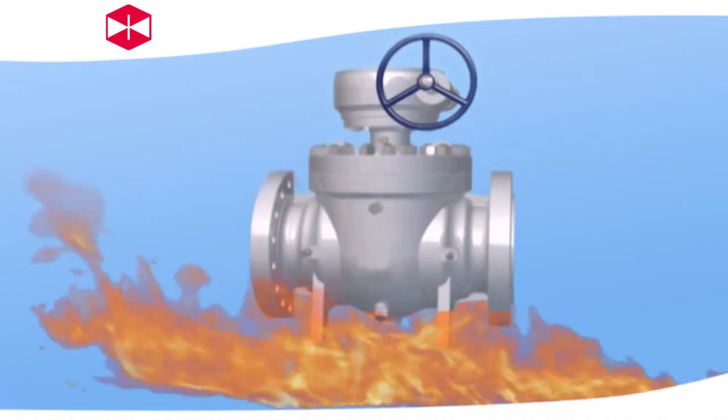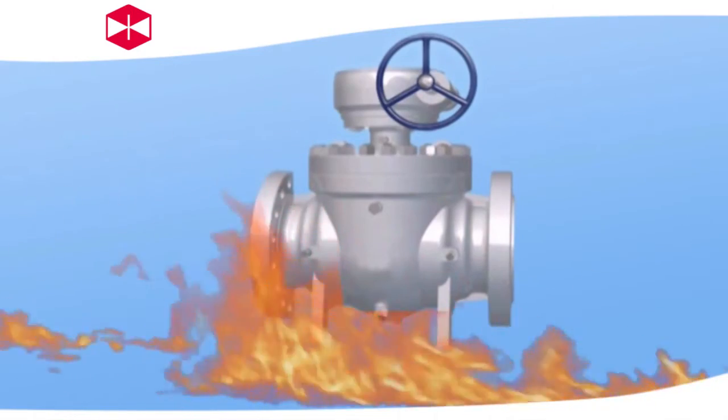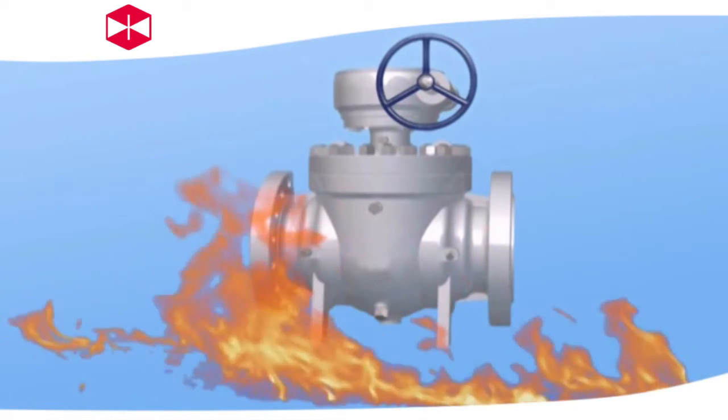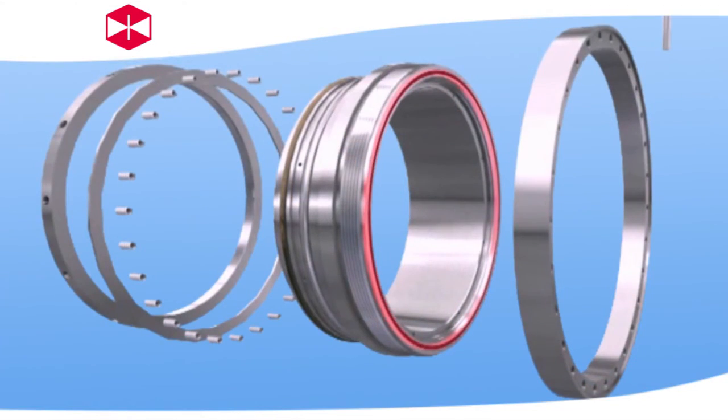Fire proof design. In case of fire, the seat ring of non-metallic material will be burned. The quantity of medium will promote the spread and the expansion of fire. The fire protection structure can stop the medium leakage.